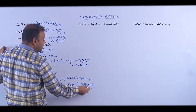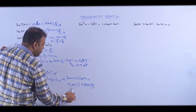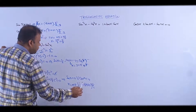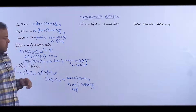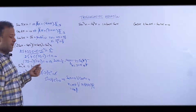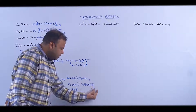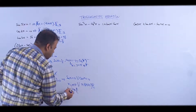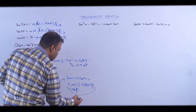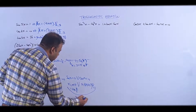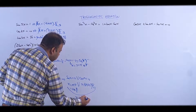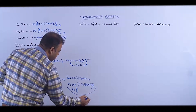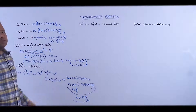(2n+1)π/2 is odd multiples of π/2, and nπ = 2mπ/2 is even multiples of π/2. Together, they cover all multiples of π/2. So the combined answer is x = kπ/2.